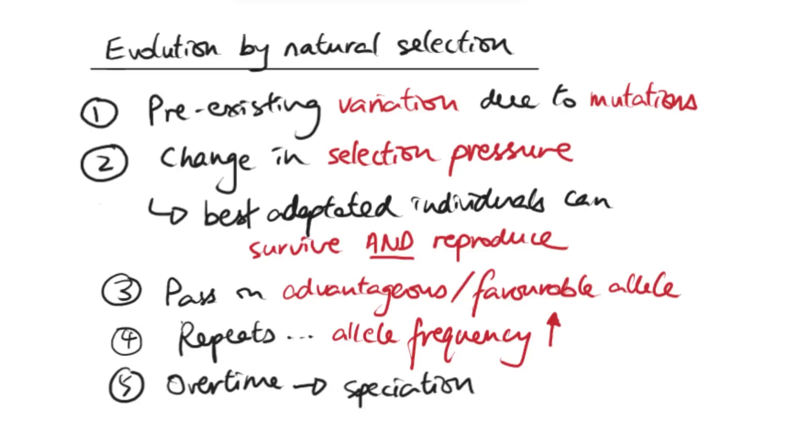And as time goes on and this repeats, more and more of those that don't have the allele will die. And those with the favorable allele would reproduce furthermore, increasing the allele frequency. So more and more individuals within that population have the same favorable allele. And along with the inheritance of other alleles as well at the same time, over time, that could lead to speciation, which is the rise of a completely new species, meaning they can no longer reproduce with the original species to make fertile offspring.